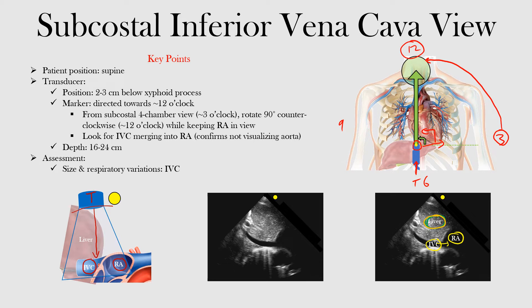This is the transducer, and this is the marker. The transducer is here, the marker shown in yellow — and we're looking for the inferior vena cava going into the right atrium.